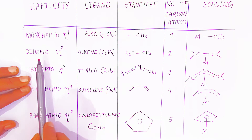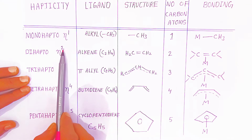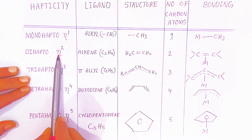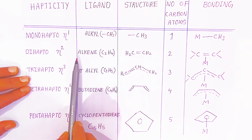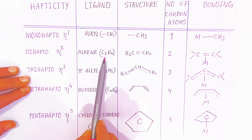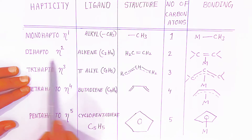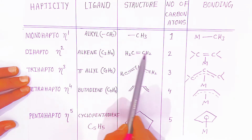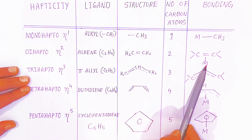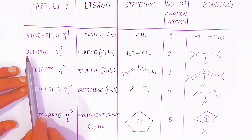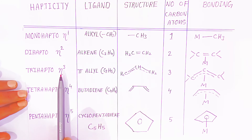The second type is the di hapto ligand, symbolized as eta raised to two — 'di' meaning two. The example is alkene with formula C₂H₄. In its structure, there is a carbon-carbon double bond, and both carbons are involved in bonding with the metal, which is why it is called a di hapto ligand.